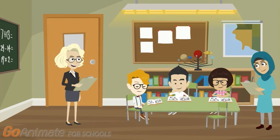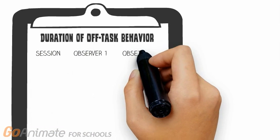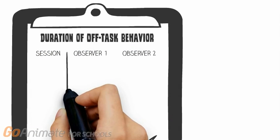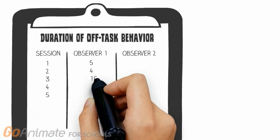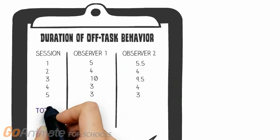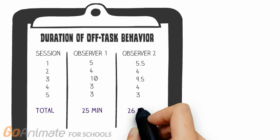I will cover two methods of calculating IOA using data obtained from two independent observers recording off-task behavior during class time. Here we see the duration of off-task behavior recorded by two observers during 5, 10-minute sessions, and the bottom shows the total duration that off-task behavior was recorded.